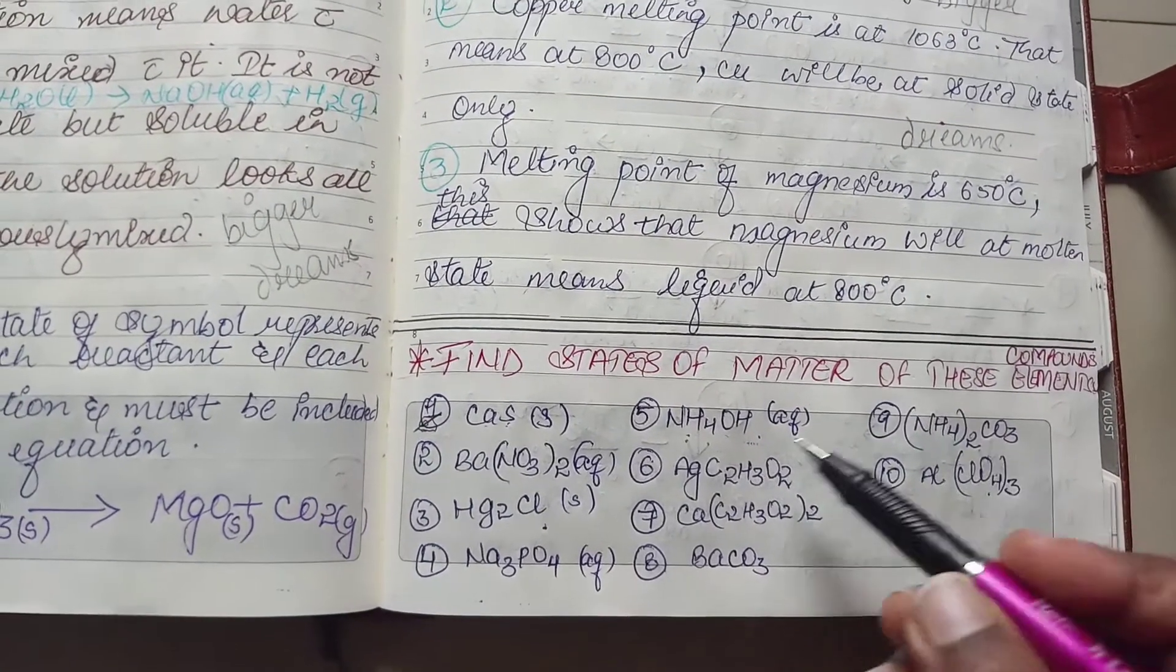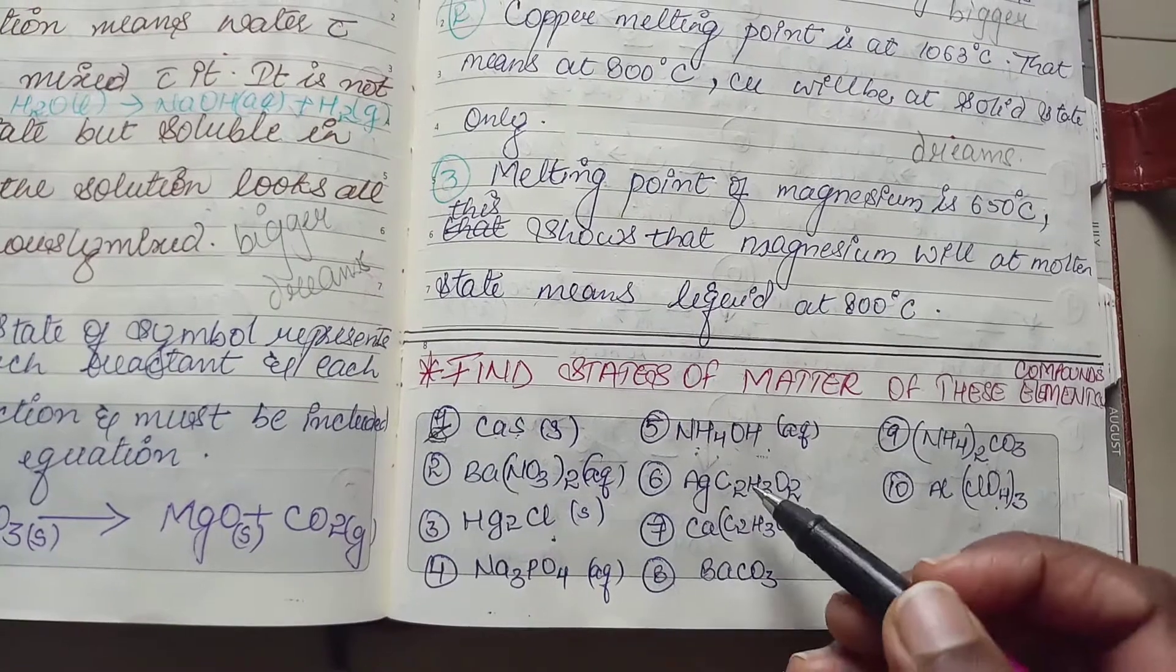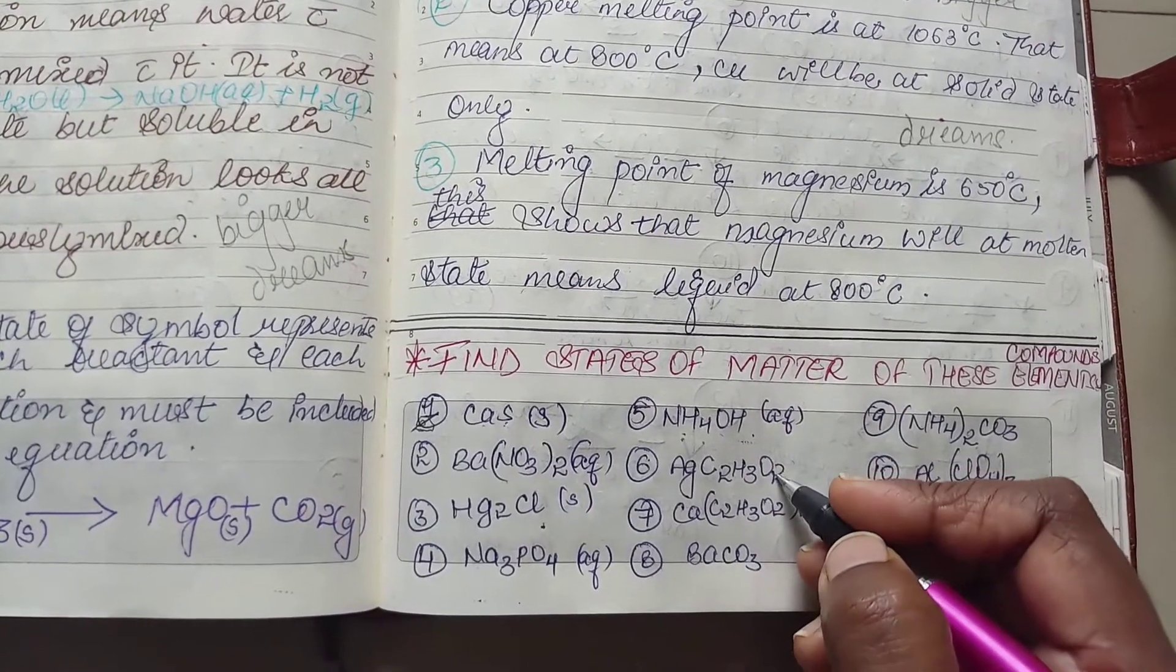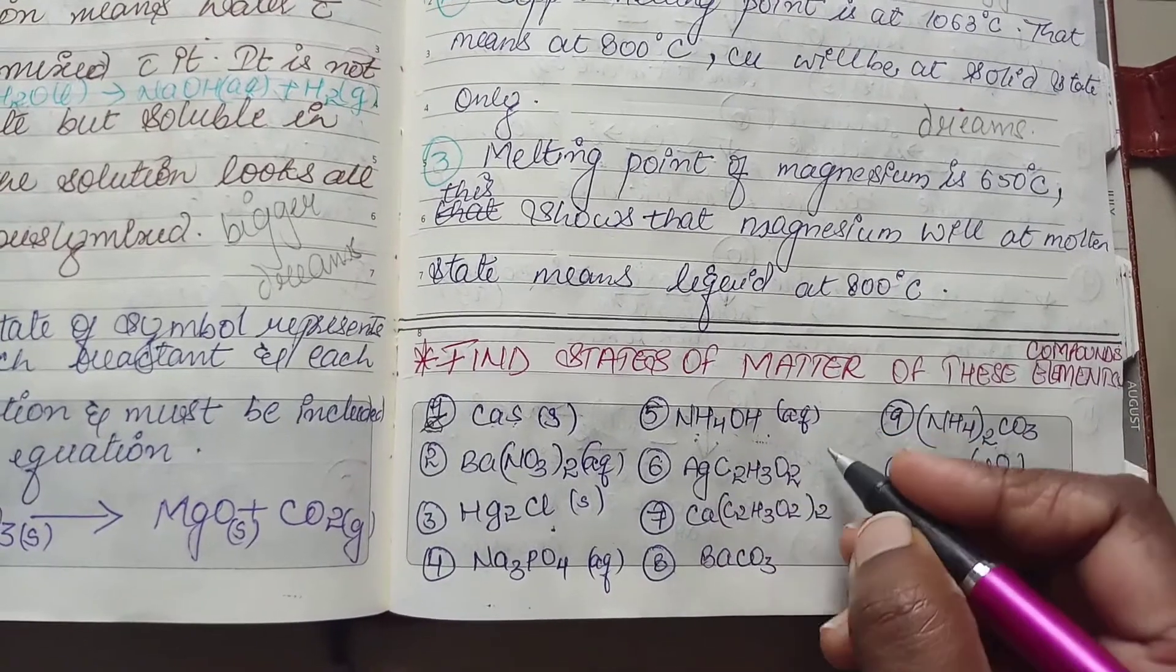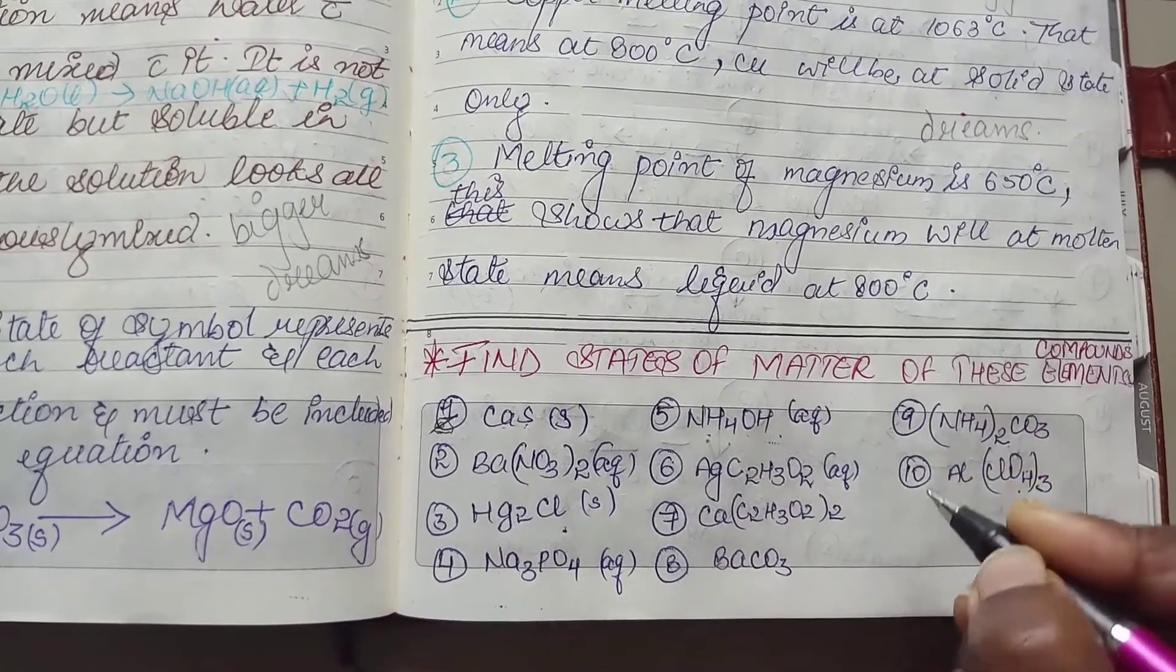Now we have silver acetate. So, acetate has no exception which is making it, though acetate is soluble in nature, aqueous. There is no exception which is making it insoluble. So, this compound is going to remain aqueous.